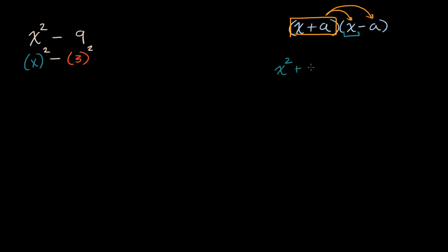A times x is plus ax. Then when we multiply by the negative a, it becomes negative a times x minus a squared. These middle two terms cancel out, and you're left with x squared minus a squared - a difference of squares.